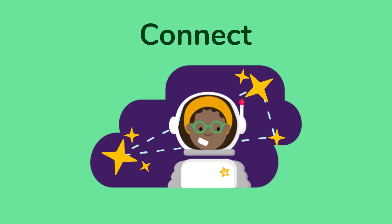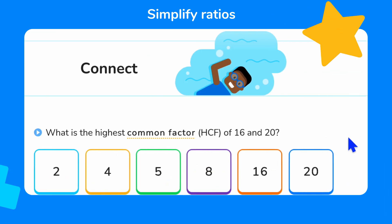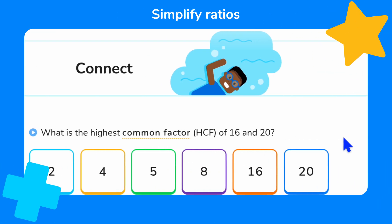First, let's connect what we already know by calculating the highest common factor of 16 and 20, which will help us with the rest of this lesson. To calculate the highest common factor of two numbers, we need to list all of the factors of each number first. The factors of 16 are 1, 2, 4, 8 and 16. The factors of 20 are 1, 2, 4, 5, 10 and 20.